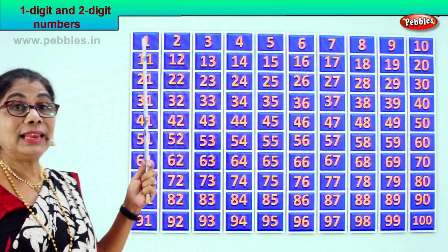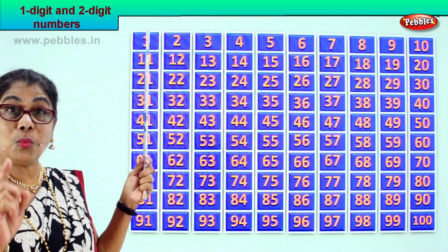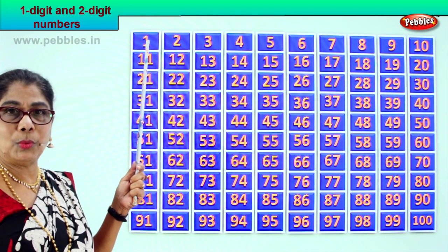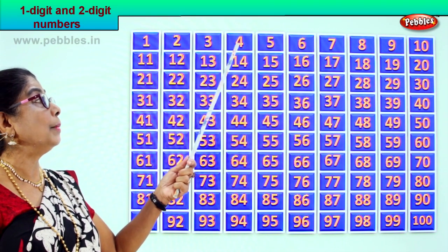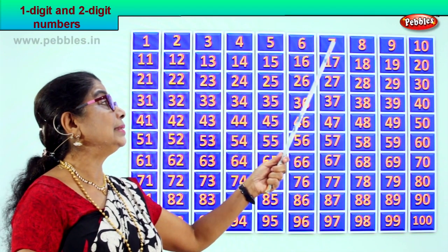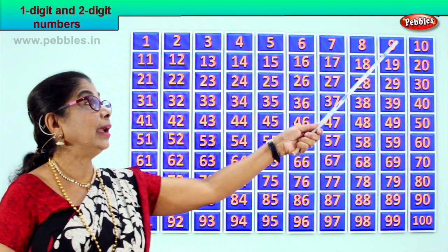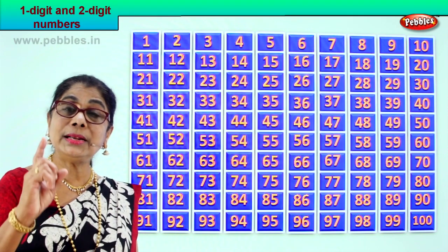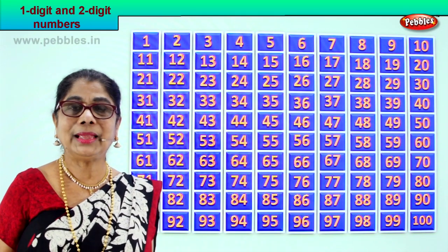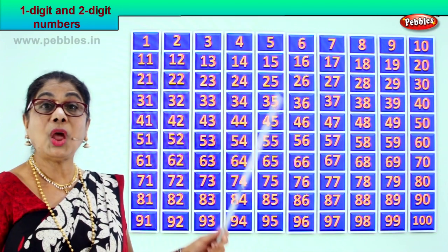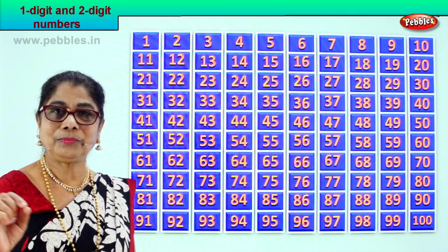Single numbers are called one-digit numbers. When it is one, look — in the ones place you have just one number, so we say it is a single digit or one-digit number. Single number one, single number two, three, four, five, six, seven, eight, nine. So we have nine numbers — 1 to 9. They are all one-digit numbers, or single digit numbers. They don't have any partner.